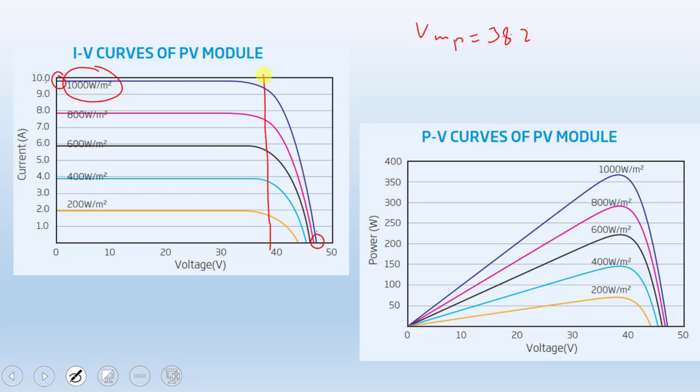So our operating maximum operating point is here. Similarly, on the P-V curves, we can see that on the 1000 watt per meter square, the 38.2 is almost here, which is obviously the maximum power point of this module.